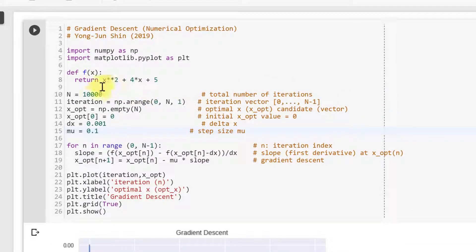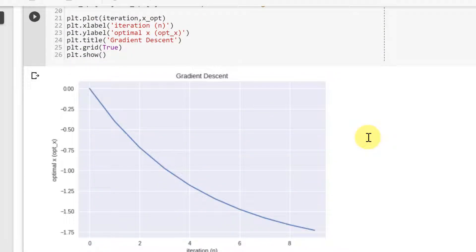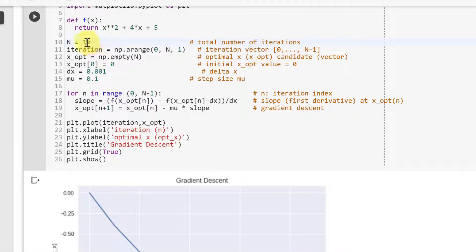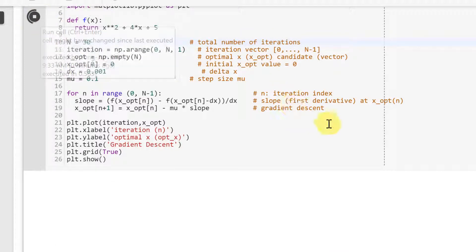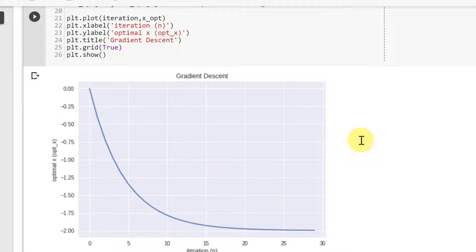Okay, maybe we want to decrease this number of iterations. Make it 10. Okay, maybe 10 is too small. Let's make it 30. And run it again. And you see that which is quite okay.